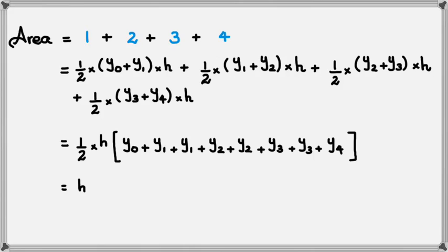Every one of these equations has a half and an h, so I can take that out. Inside I have double 2y1s, 2y2s, 2y3s. The first and last term get used once, but the middle terms get used twice, which means I can simplify the formula to h over 2 times y0 plus 2y1 plus 2y2 plus 2y3 plus just 1y4.